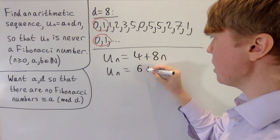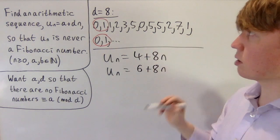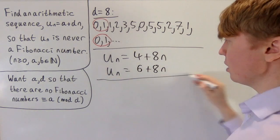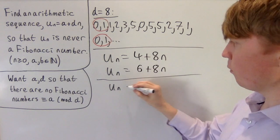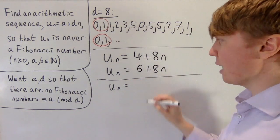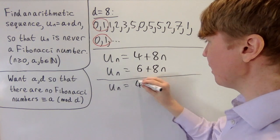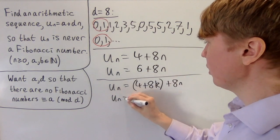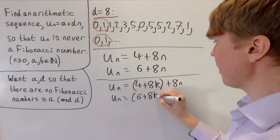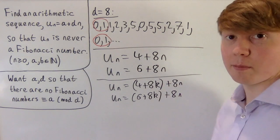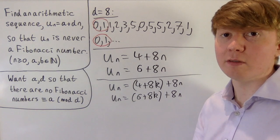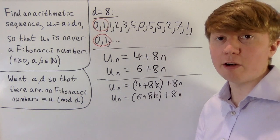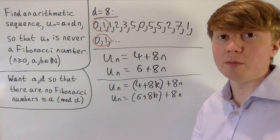Similarly, we could take u_n equals 6 plus 8n, since nothing equivalent to 6 modulo 8 appears in the Fibonacci sequence. More generally, we could take a equal to 4 plus 8k plus 8n, or 6 plus 8k plus 8n, where k can be any positive or negative integer. So we have solved the problem of finding an arithmetic sequence that avoids the Fibonacci numbers entirely.